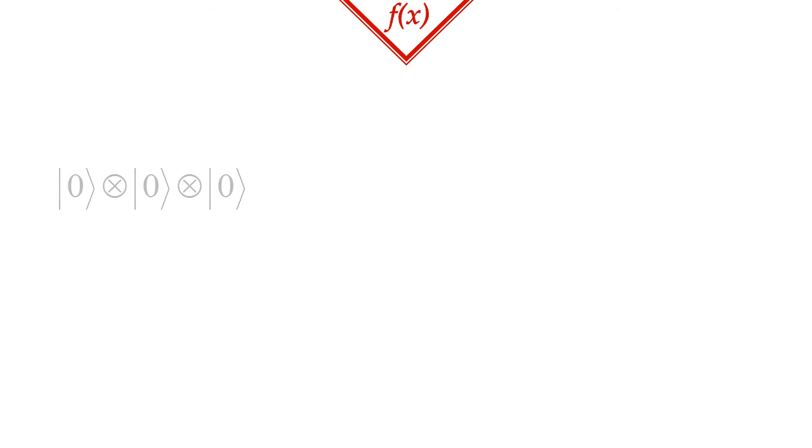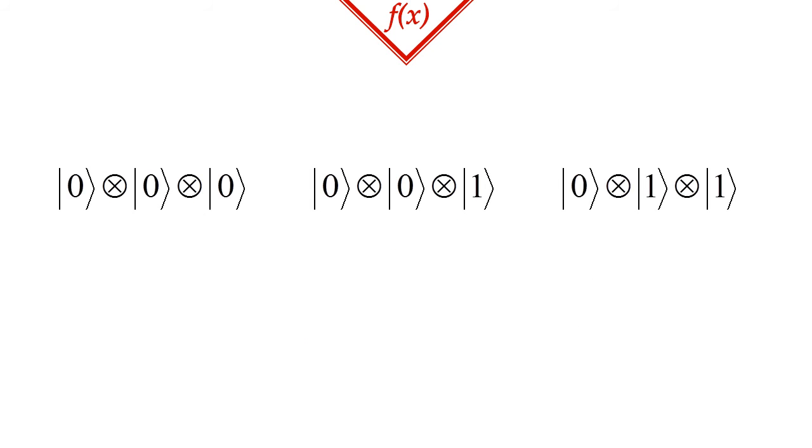Note, that in bracket notation we don't always write out the tensor products. Often, we just label the resulting basis vectors with a binary number instead, that represents the product.